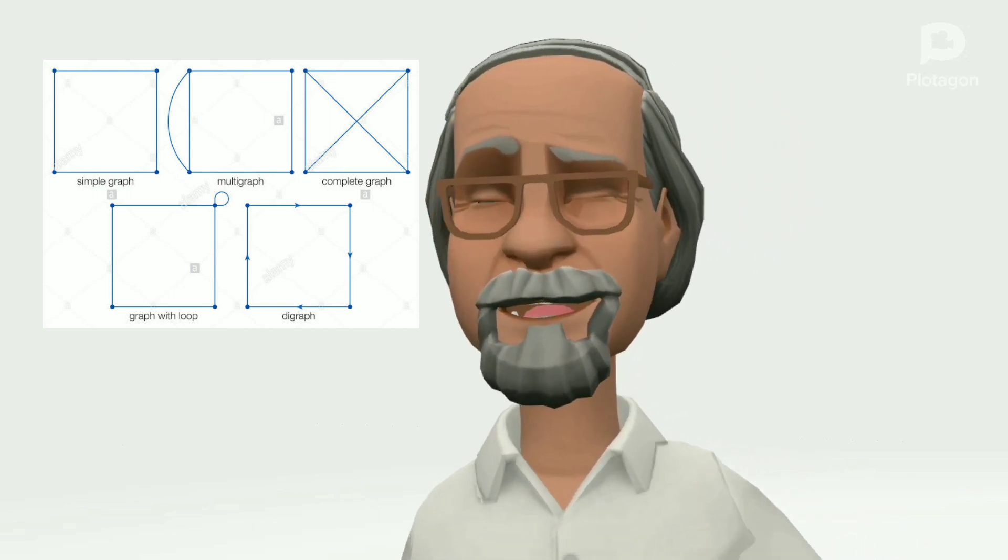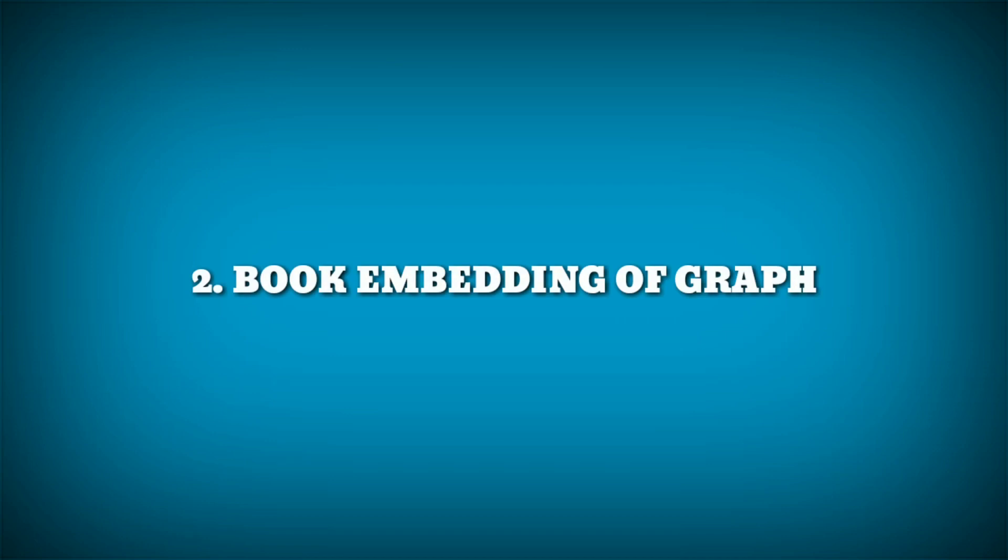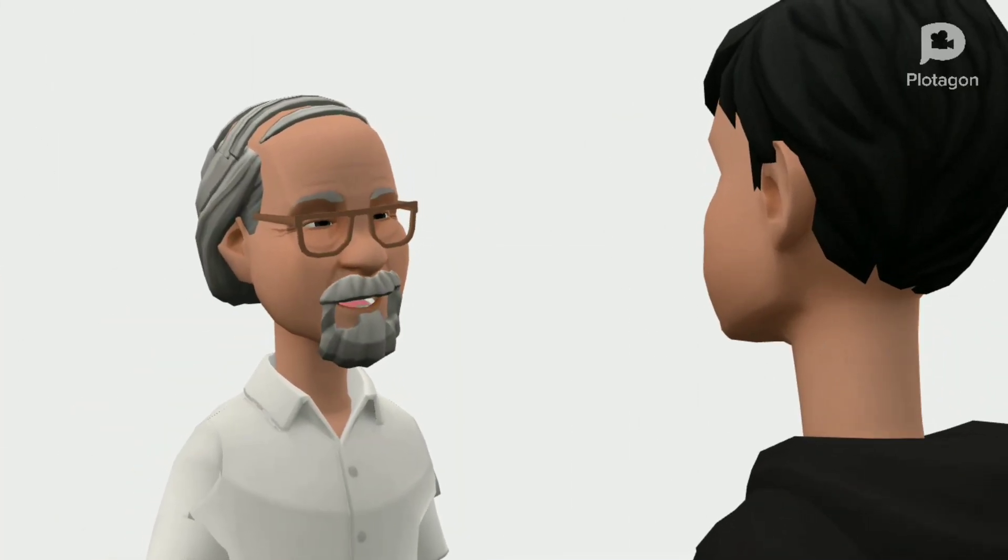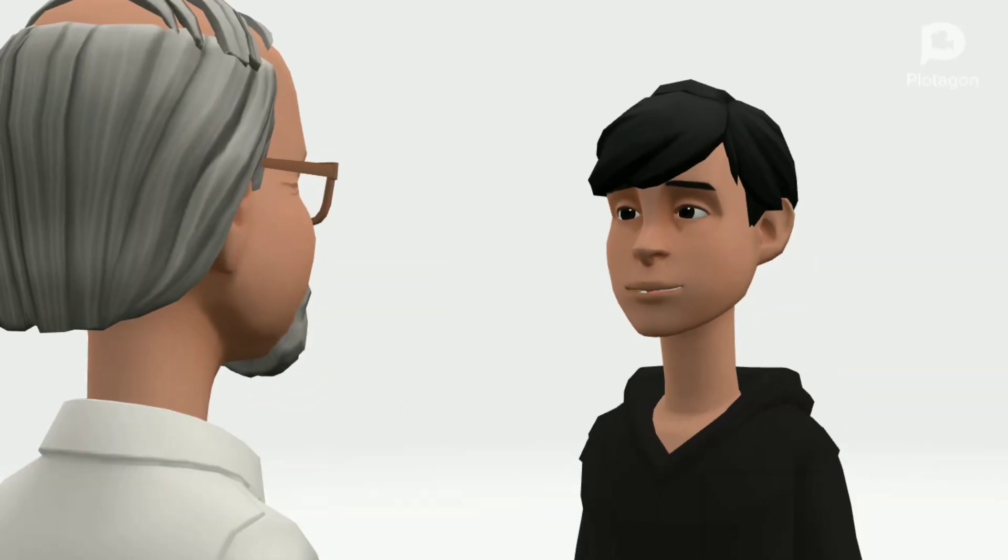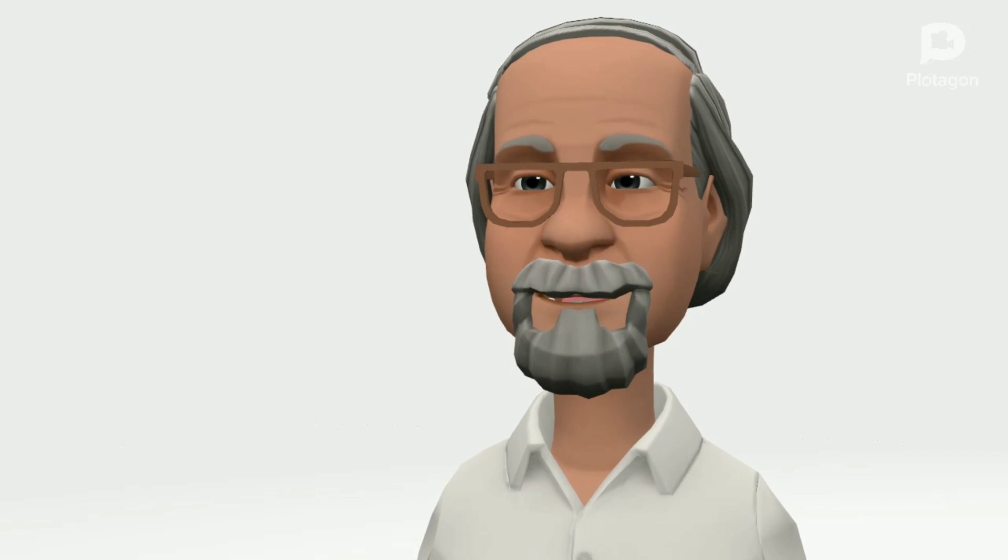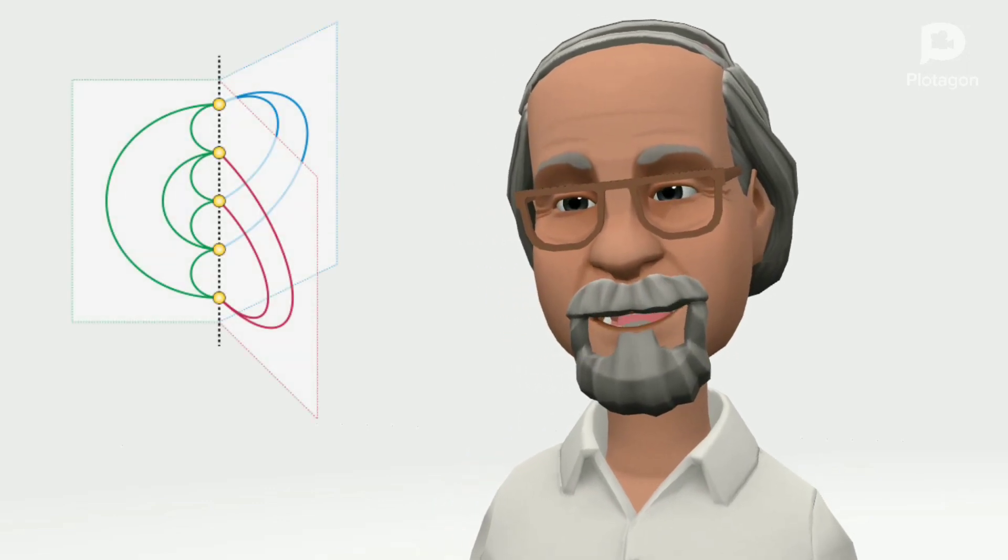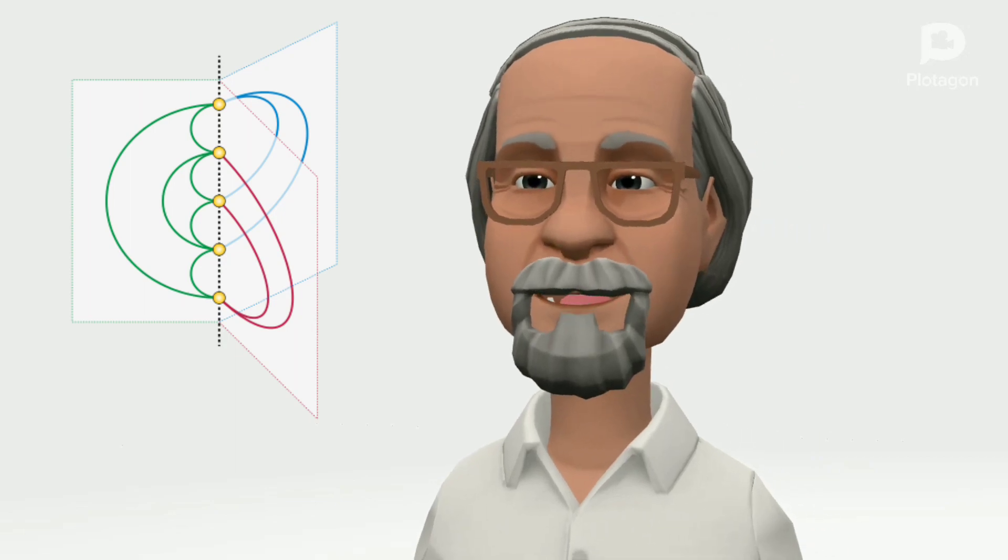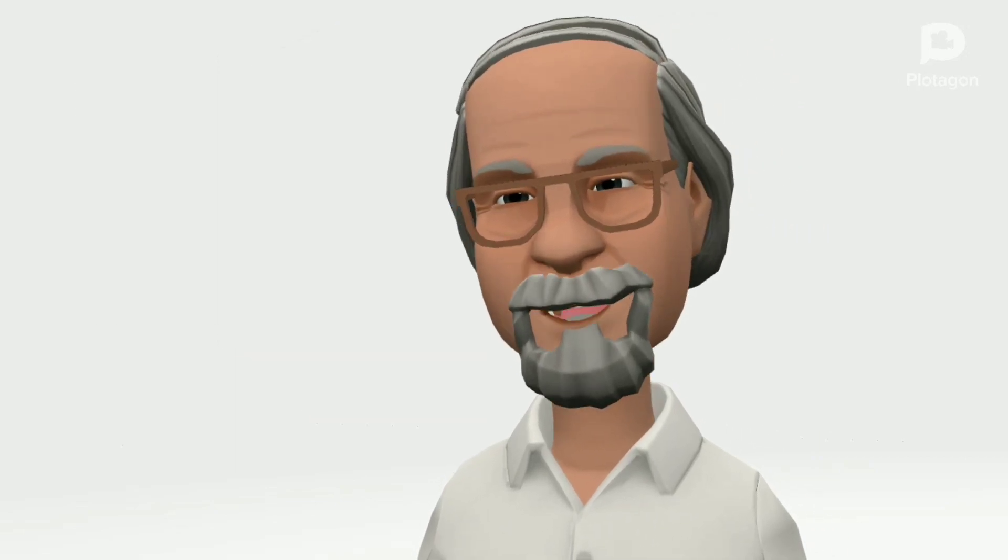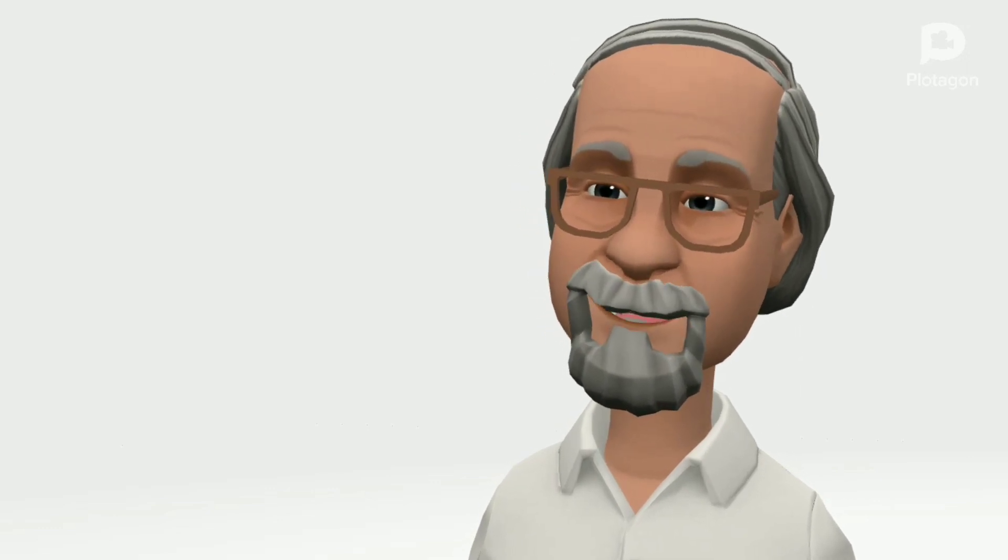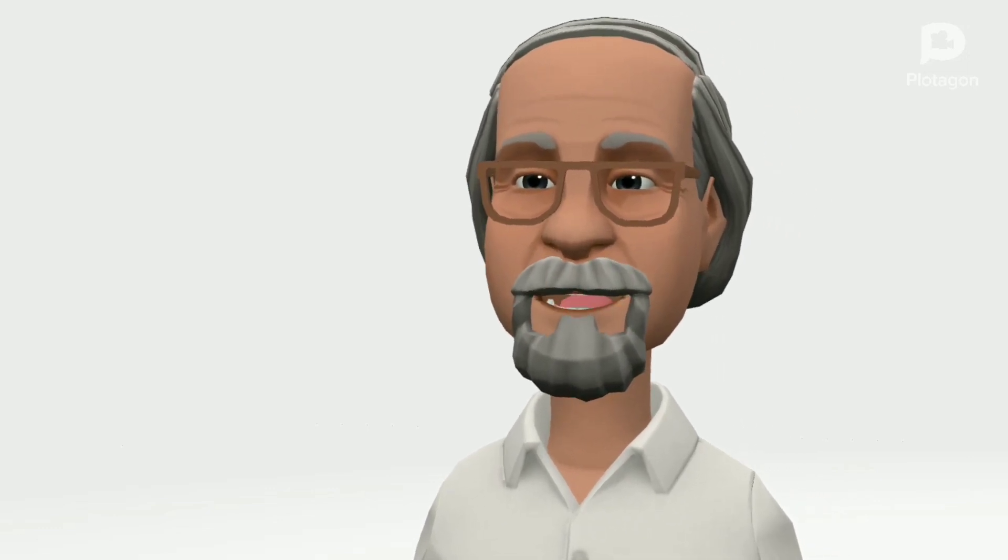So now I'm going to explain about book embedding of graph. Okay Professor, what is book embedding? In graph theory, a book embedding is a generalization of planar embedding of a graph. Embeddings into a book, a collection of half-planes all having the same line as their boundary. Usually the vertices of the graph are required to lie on this boundary line called the spine, and the edges are required to stay within a single half-plane.